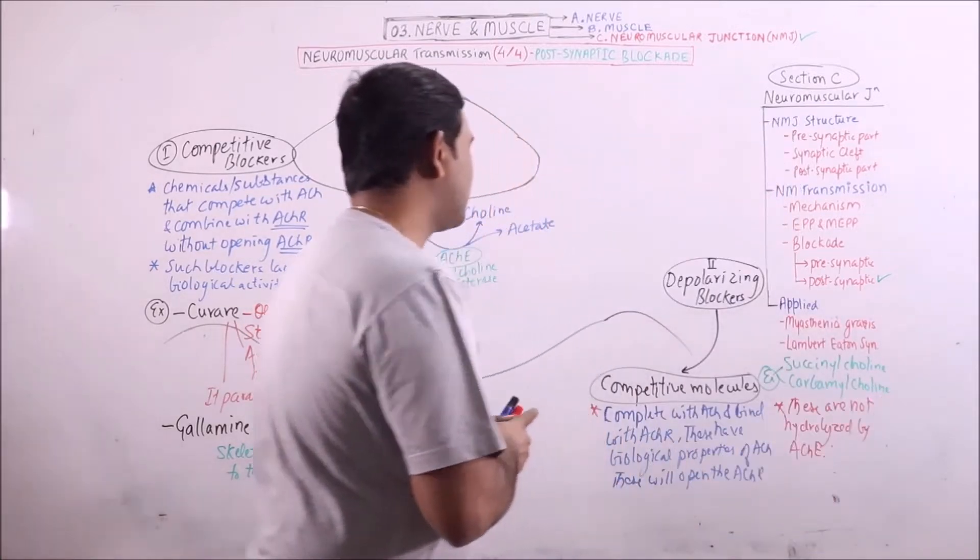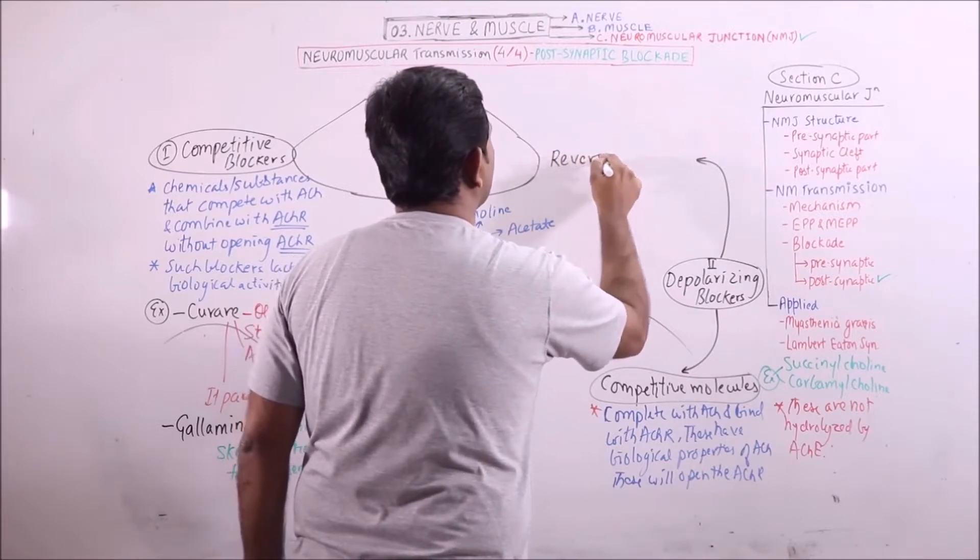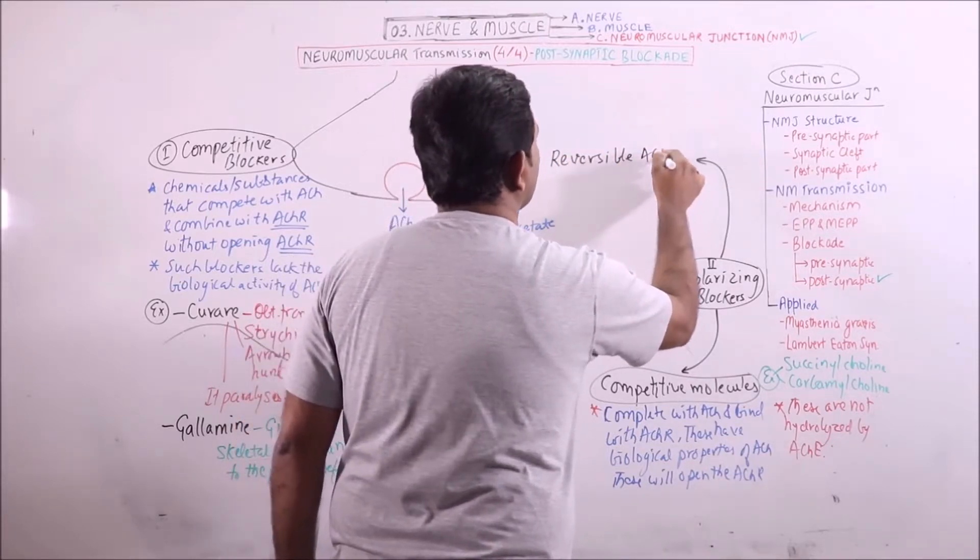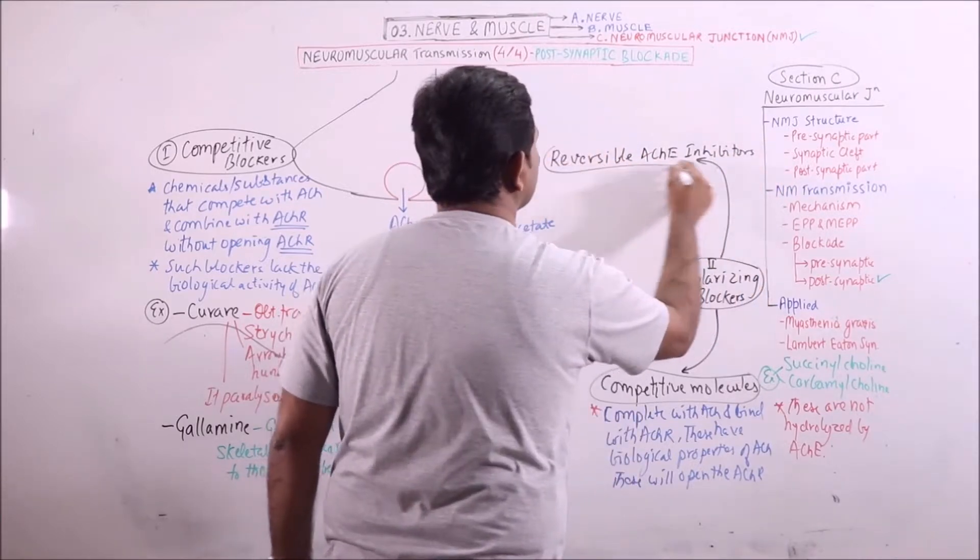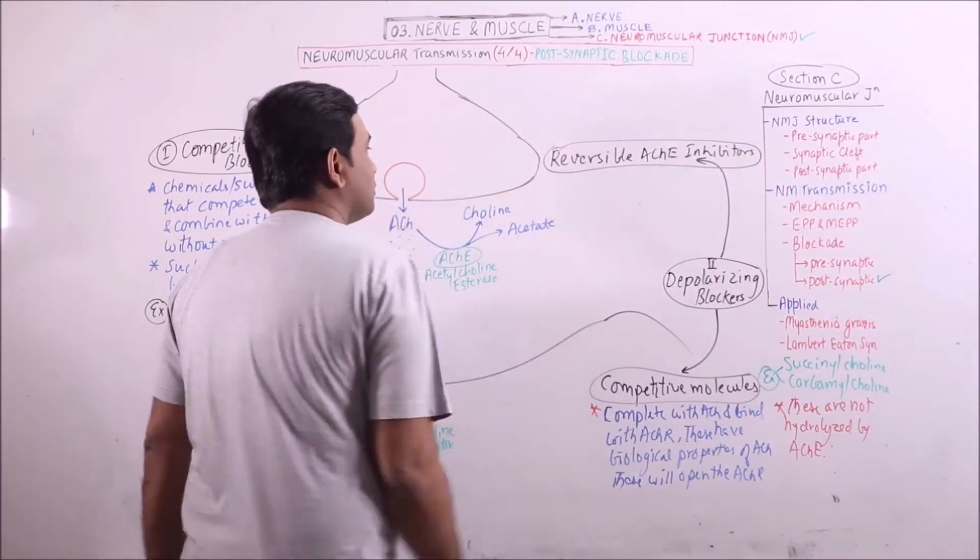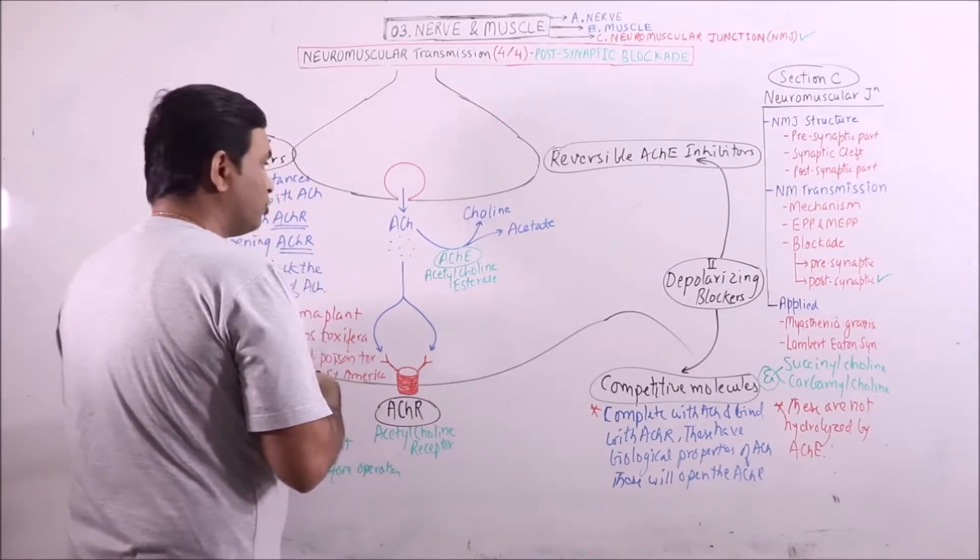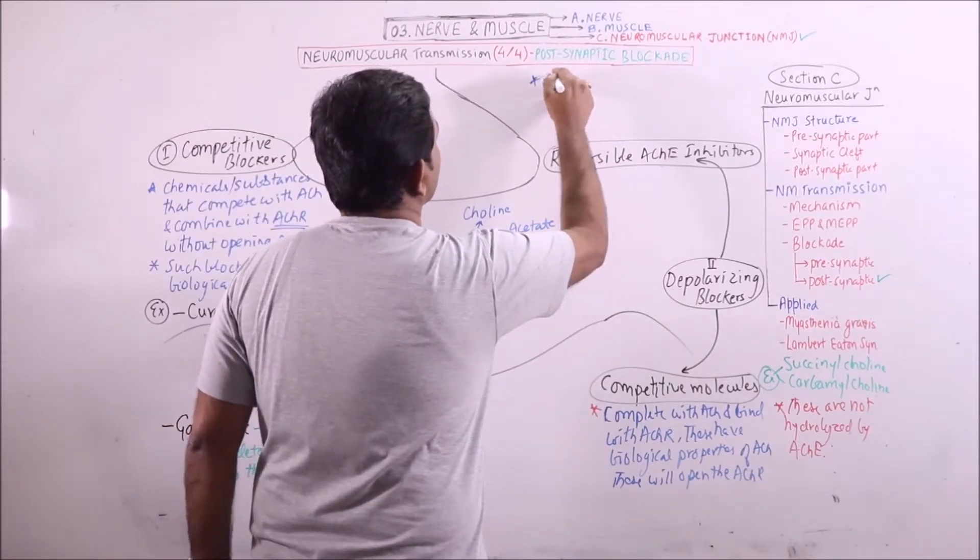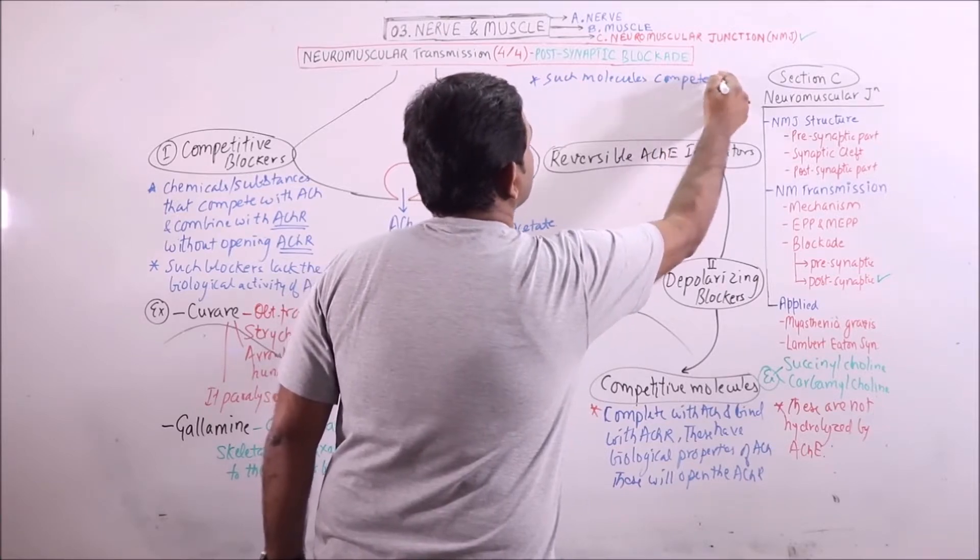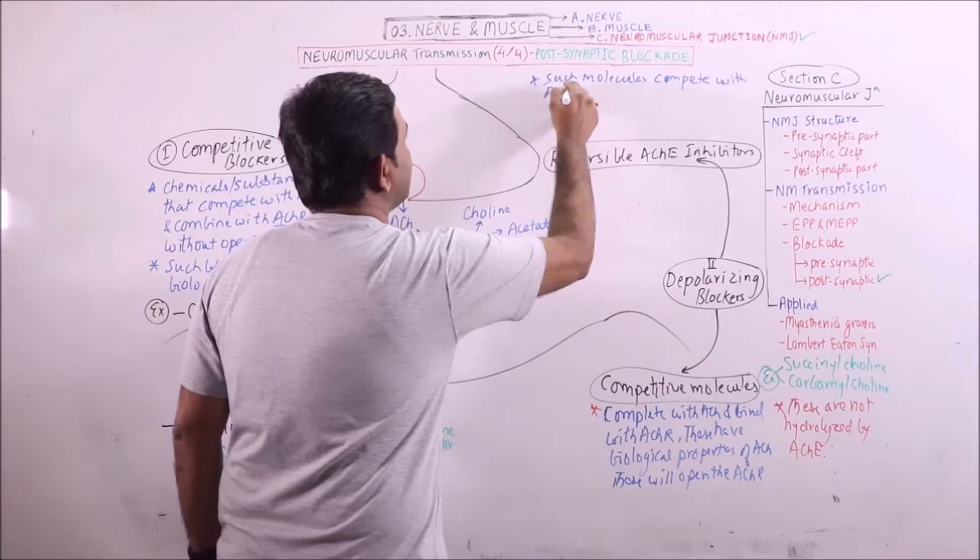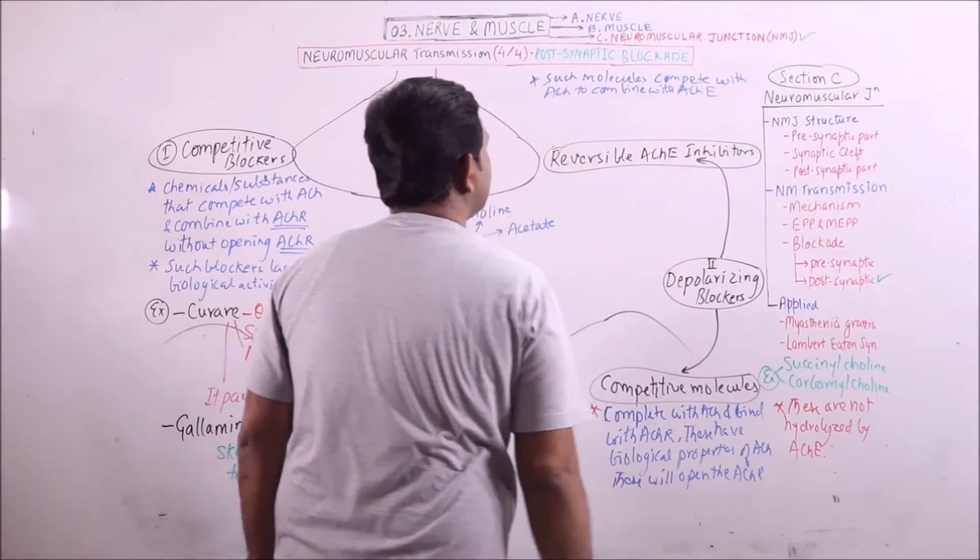Another category of depolarizing blockers is reversible acetylcholine esterase inhibitors. Such molecules will compete with ACHR to combine with acetylcholine esterase. Such inhibitors compete with ACHR to combine with acetylcholine esterase enzyme.